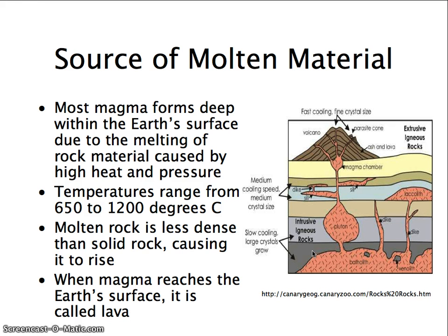Molten rock is less dense than solid rock because of that heat — the kinetic energy. The motion of the material is molten, so the molecules are moving faster than in solid rock. This causes it to want to rise. However, there is a hard outer crust that prevents it.